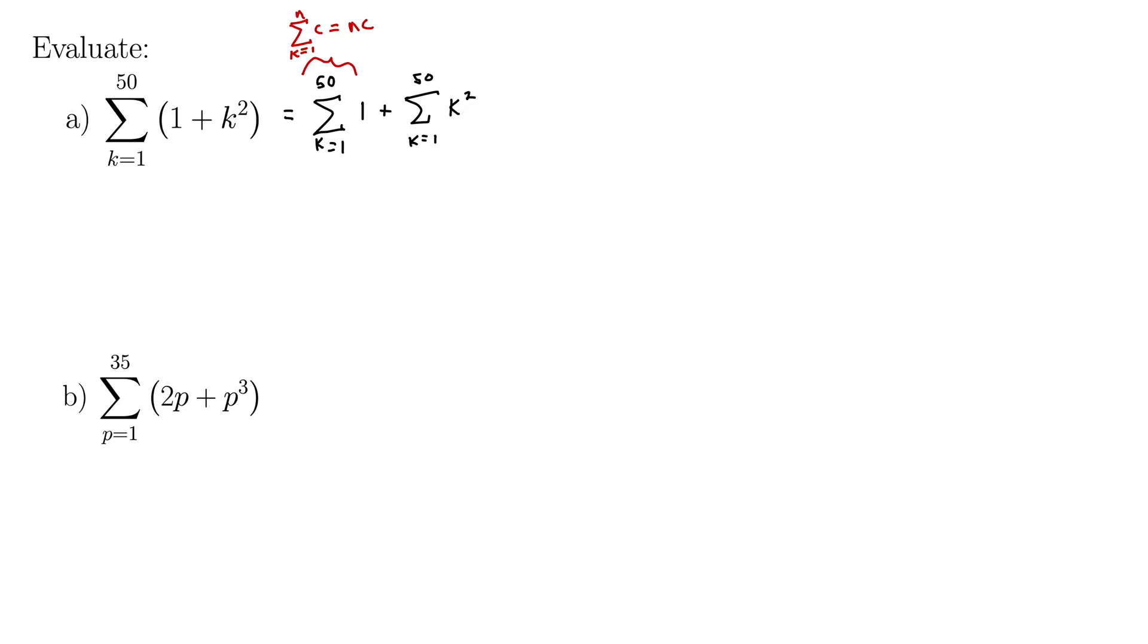Now, recall that the sum of a constant, added again and again, is just n times that constant. So this first one is simply 50 times the constant, which is 1. 50 times 1, plus.